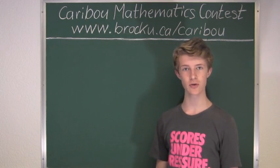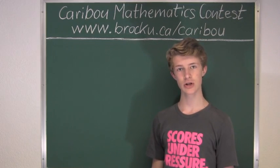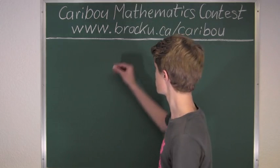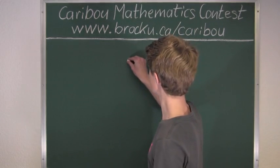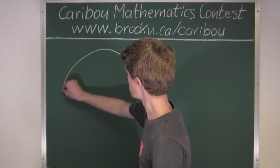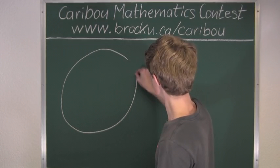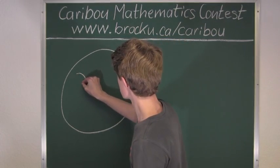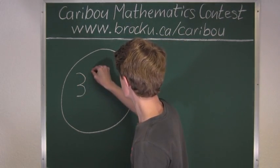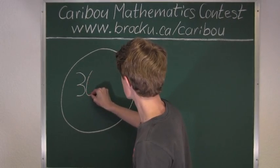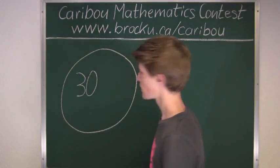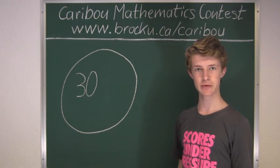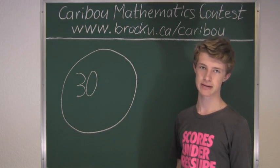I will draw the first circle, which represents the 30 numbers divisible by 6. And now I will draw another circle, which represents the 20 numbers divisible by 7.